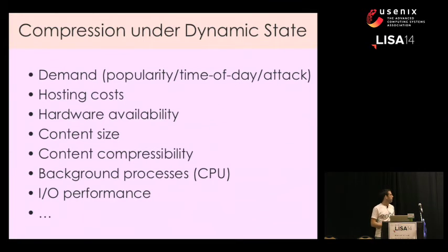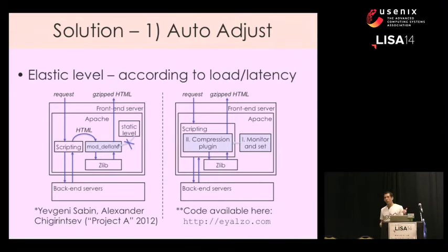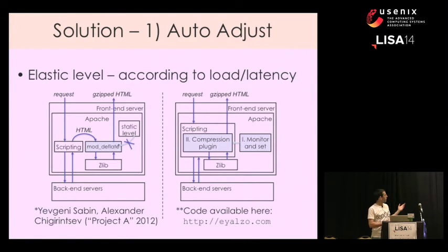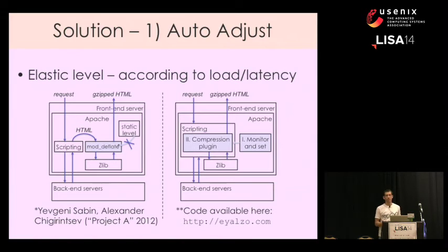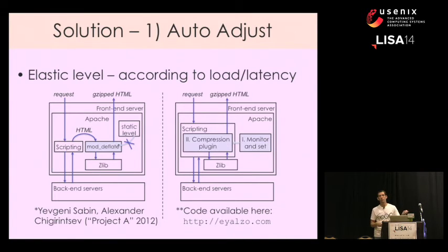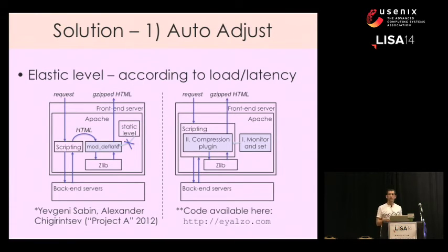So what we did: we offered two solutions, both free and available on my website. The first solution is to modify mod_deflate — the module responsible for deflate compression, which is the name of the Gzip compression. Instead of reading the static level from the configuration, this modified module reads it from a separate internal process that calculates how much free CPU you have. So we can automatically drop the compression level to 1, 2, or 3 when CPU demand is high, and compress everything correctly.